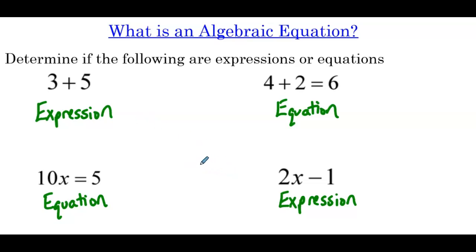The variables don't matter — one expression has a variable, similarly for the equations — but the big difference is the equality. It's important to distinguish between expressions and equations because we're going to be given both throughout this course. Typically for expressions, we're going to be asked to simplify, whereas for equations with variables, we're going to be asked to solve. By correctly identifying whether we have an expression or an equation, we'll know how to correctly finish the problem.